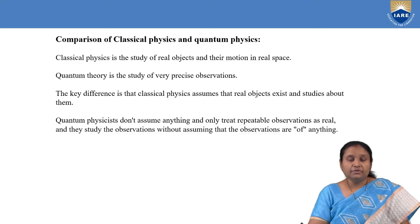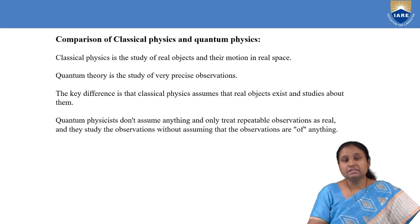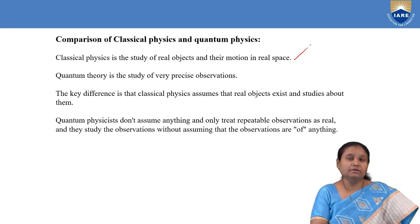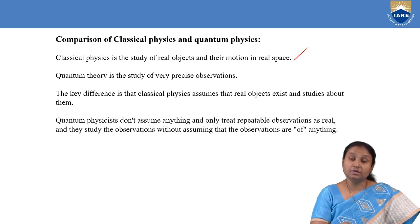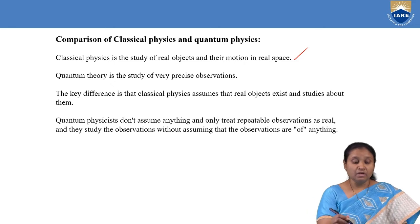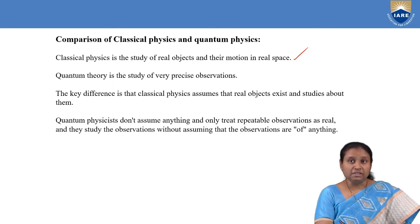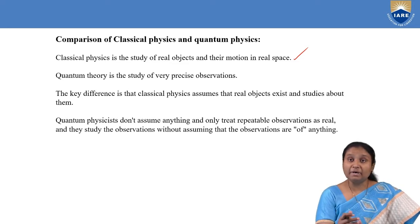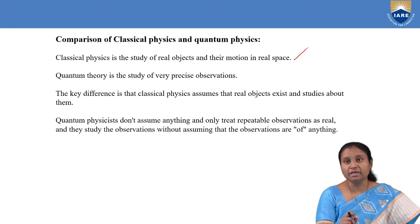When we talk about classical physics, it deals with real objects and their motion in real space. We can determine energies associated with real objects and their motion using classical mechanics. Whereas in quantum theory, we study very precise observations. Classical mechanics comes in bulk, whereas quantum mechanics comes down to atomic dimensions.